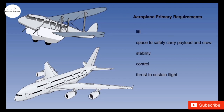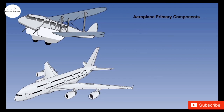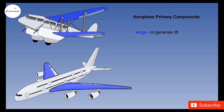To meet these basic requirements, all airplanes have some components. Number one are the wings to generate lift, which helps the airplane to fly and remain airborne.